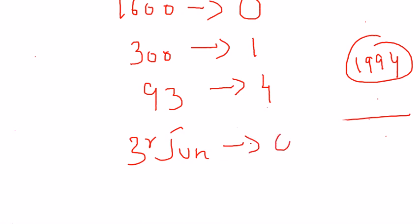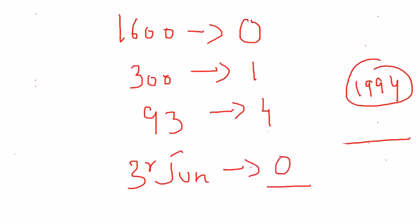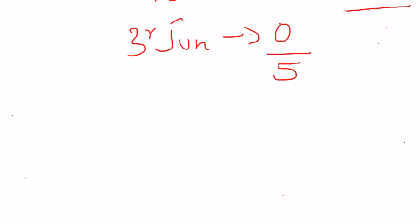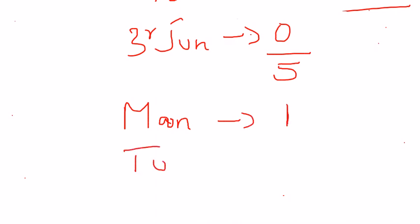Summing everything up: 0 (for 1600 years) + 1 (for 300 years) + 4 (for 93 years) + 0 (month and day part) = 5 odd days in all. Since the week starts from Monday denoted by 1, Tuesday is 2, Wednesday is 3, Thursday is 4, and Friday is 5 — that simply means the day is Friday.